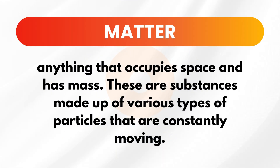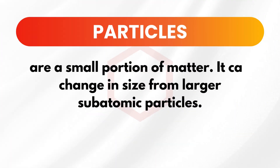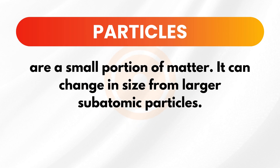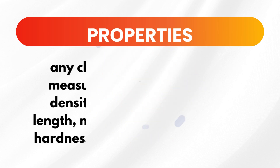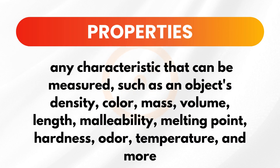Once we say matter, this is anything that occupies space and has mass. These are substances made up of various types of particles that are constantly moving. Particles are a small portion of matter and can change in size from larger subatomic particles. Any characteristic that can be measured, such as an object's density, color, mass, volume, length, malleability, melting point, hardness, odor, temperature, and more, are considered properties of matter.